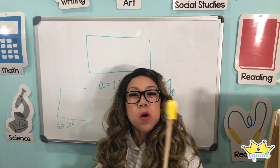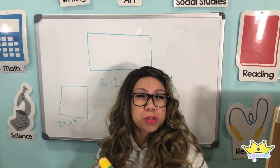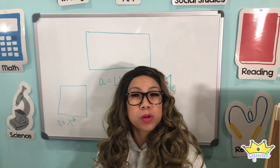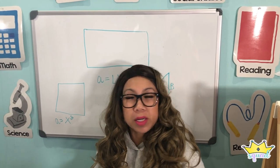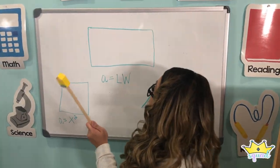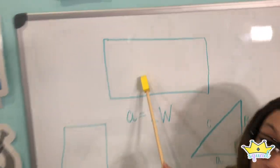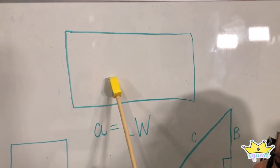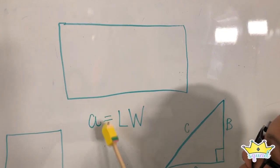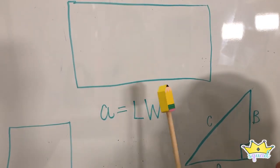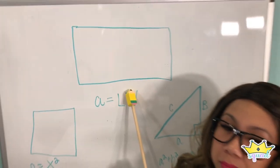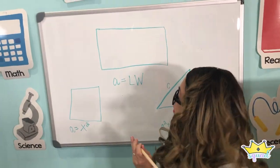Okay class, so today in geometry we're going to be learning about the area of different shapes. So right here we have a rectangle. The area of the rectangle is length times width.